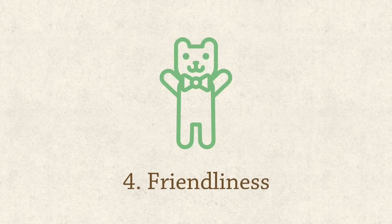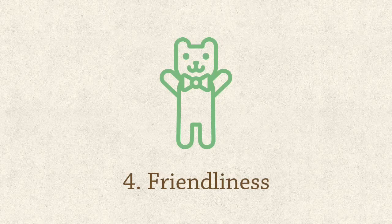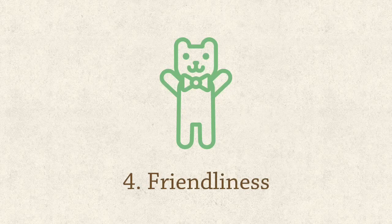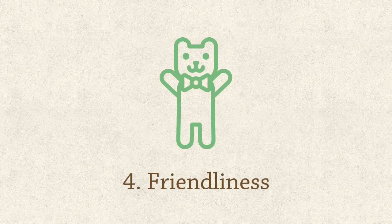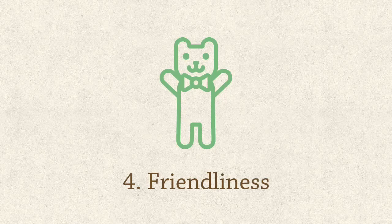Principle four is friendliness. Relationships just work better when we are friendly with each other. Being friendly can cushion the bumpy ride we sometimes experience in our classrooms. Cheerfulness goes a long way towards building lasting relationships — nobody wants to be around a grump. The friendlier you are, the more people will want to pursue longer and more impactful relationships with you. So cheer up, put on a smile, have kind words to say. Treat your students with friendliness and you'll see your relationships improve.